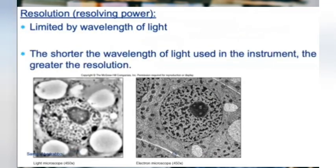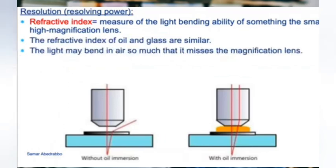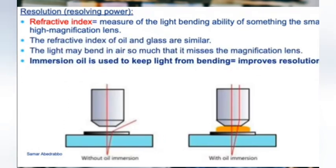Resolution is limited by the wavelength of light. Light is a wave, and because of this, when it hits something it can bounce off. At 100x objective lens magnification we have to do something called oil immersion. That objective lens is very close to your slide, and without oil the light from the microscope bounces off because of the properties of light.